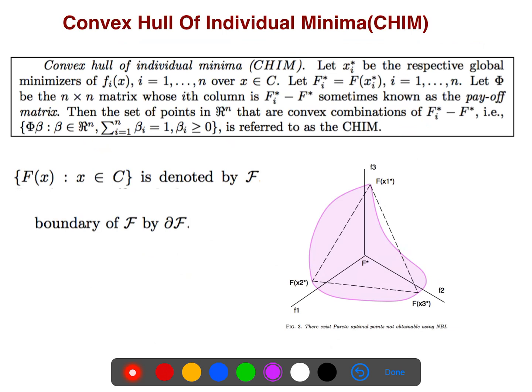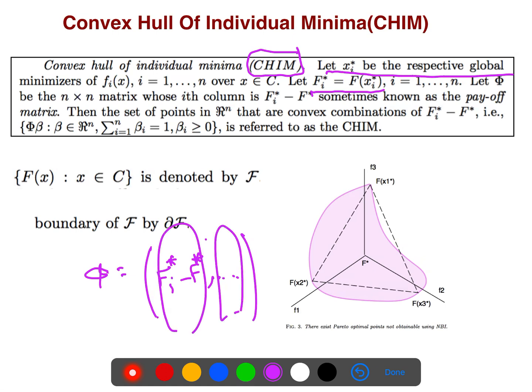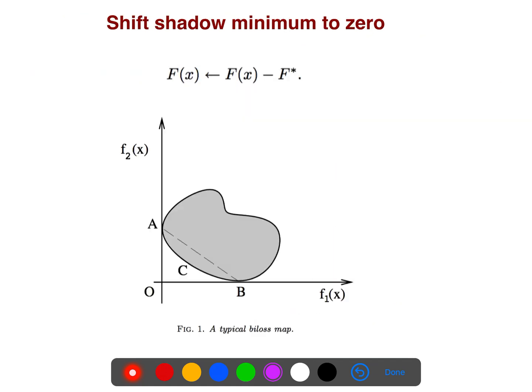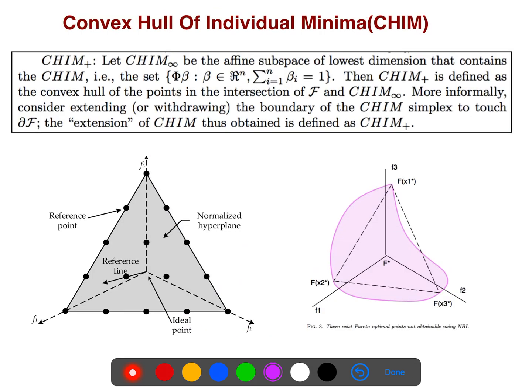So convex hull of individual minima, CHIM. Let X-bar be a respective global minimizer, so F of X-bar for each of them - these are the coordinates. Matrix phi - the columns of matrix phi are just FI star minus F star. These are the columns of phi. We are just trying to systematically parameterize the hyperplane that we talked in our previous lectures, using the minimal solution of individual points.